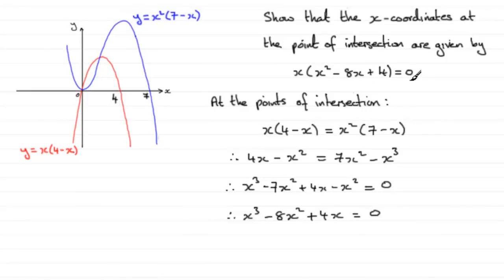And you can see this is starting to look like what we wanted. All I've got to do is notice that x is a common factor in each of the three terms. So if I factorize by pulling out x, I've got x(x² - 8x + 4) = 0. That's what we had to show.